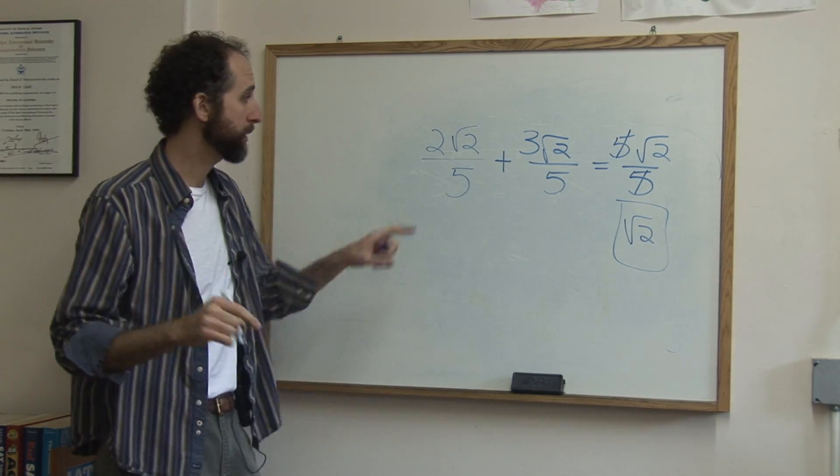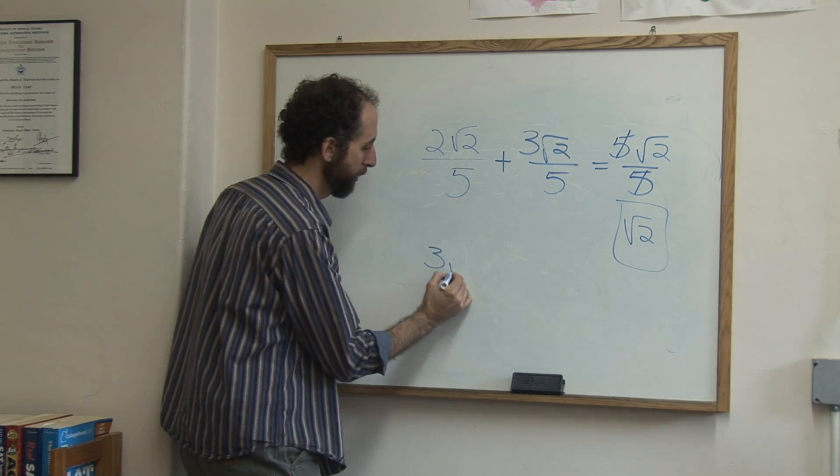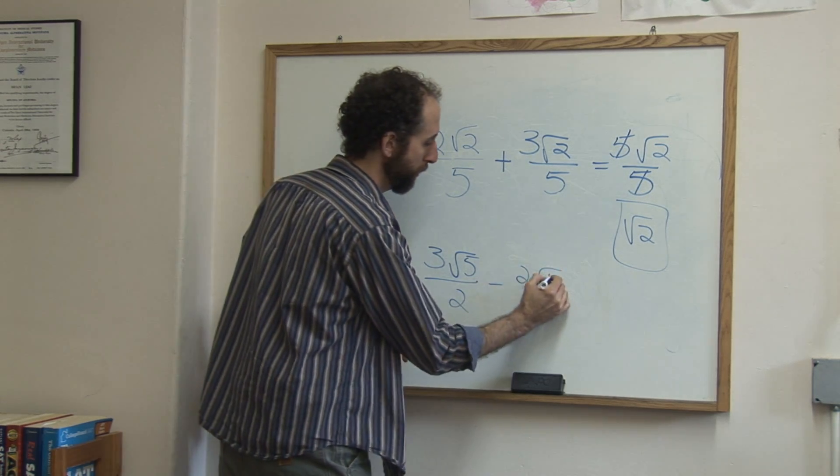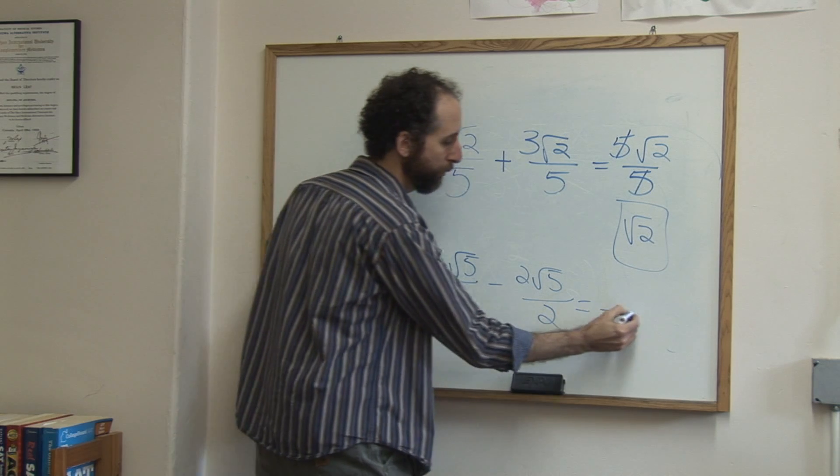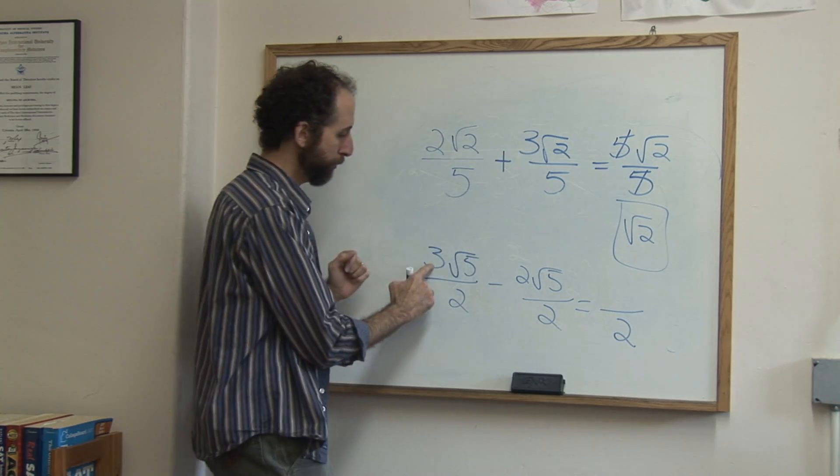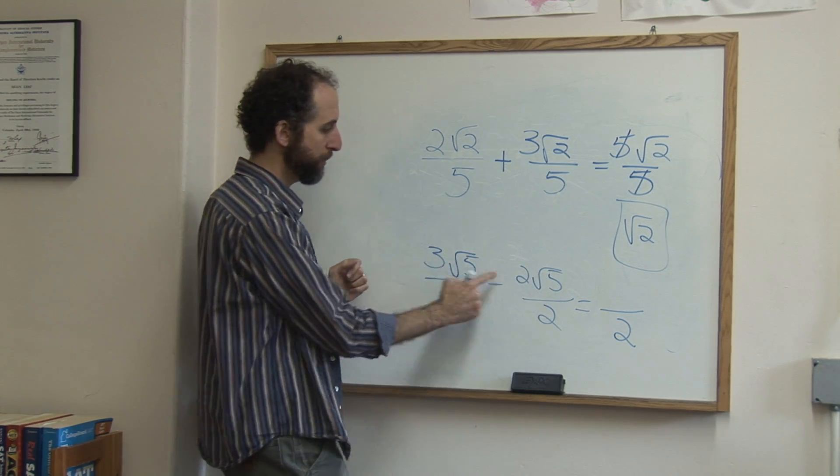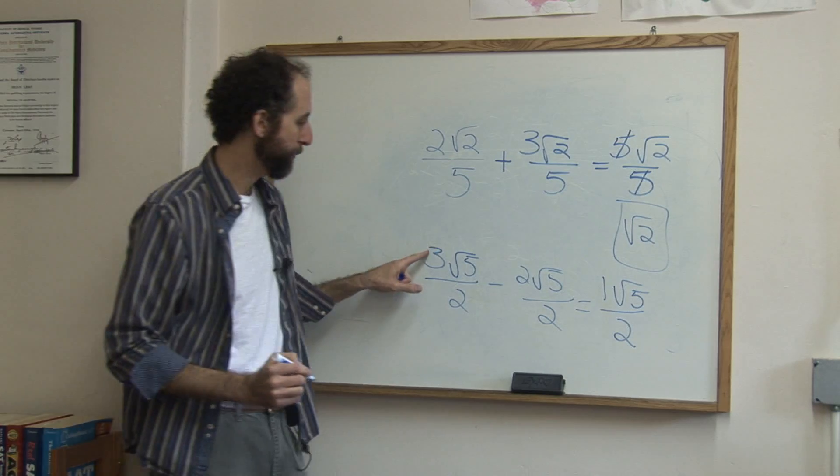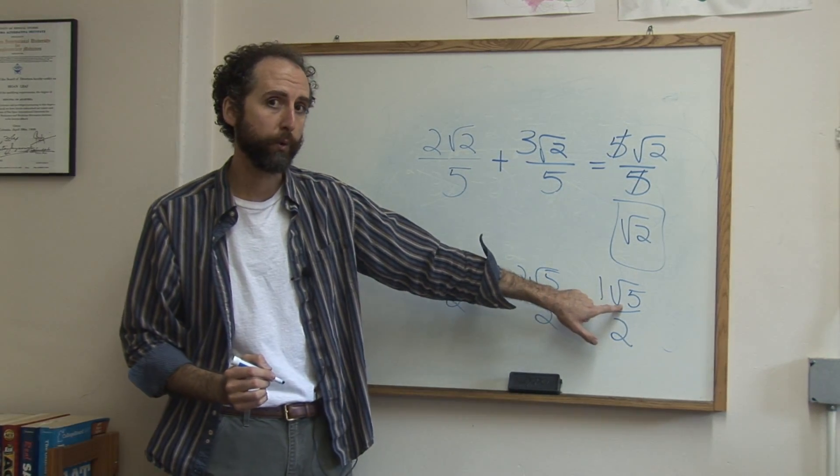Now if I'm going to subtract, it's going to be the exact same thing. I'll do one real quick. So if you have three square root of five over two minus two square root of five over two, same thing. The two you bring over. Three square root of five minus two square root of five. Three minus two is one. You keep the square root of five. It's like three apples minus two apples is one apple. That's how you treat the square root.